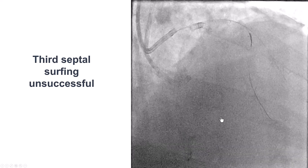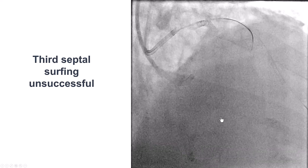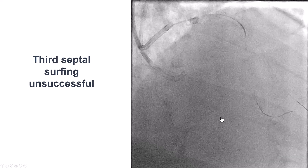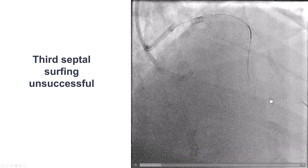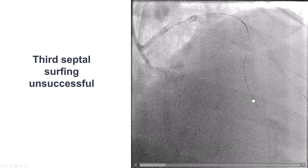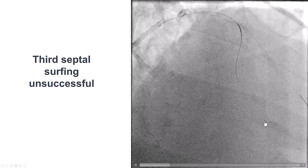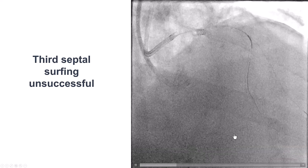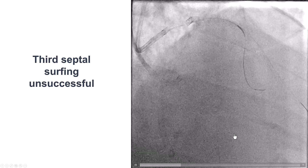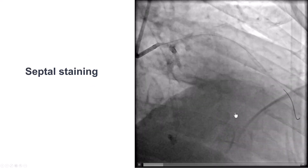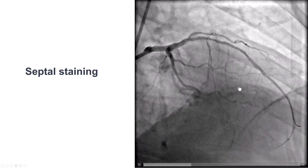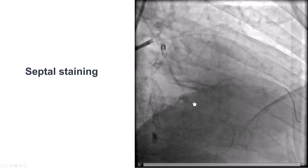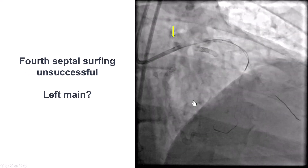We then switched to another collateral. We did surfing through the third septal collateral, but once again the wire seemed to be going in a different orientation — going more towards the apex — and it would not take the bend back towards the right coronary artery. After multiple attempts, we pulled the wire back and actually saw that there was some staining from the previous attempts to cross through the septal collateral.